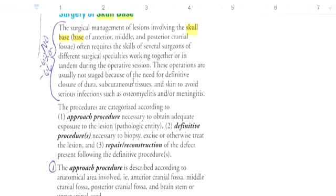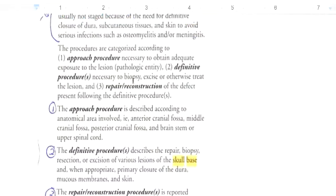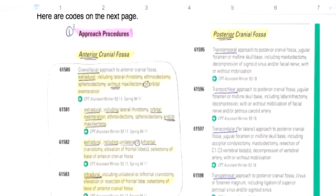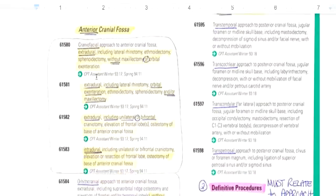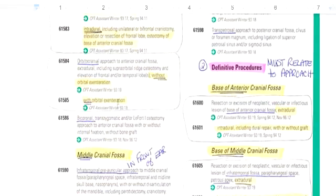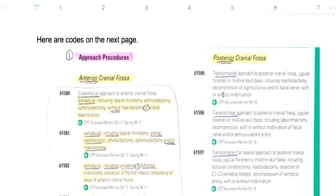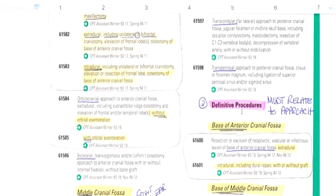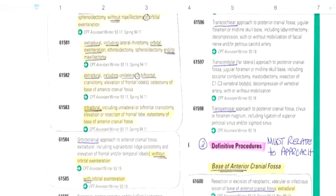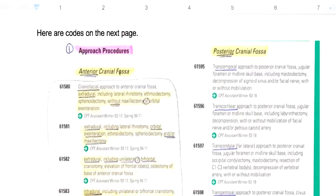There are two sets of codes. Looking at a screenshot of the actual codes, you can see the approach procedures — for example, 61580, craniofacial approach. There are anterior approaches, middle approaches, and posterior approaches. Then the definitive procedures start. The definitive procedure must relate or link to the approach procedure — so if you're doing the base of an anterior cranial fossa, your definitive procedure should correspond to an anterior cranial fossa approach. There are separate codes for the approach and separate codes for the definitive procedures.